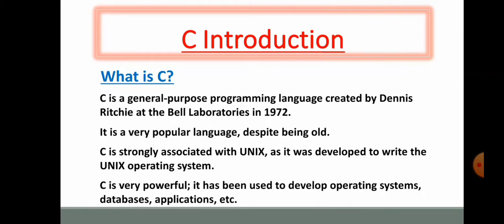C is strongly associated with UNIX. Why? Because UNIX operating system was basically developed using C programming language. C is a very powerful language. From it, many operating systems, databases, and applications are developed.